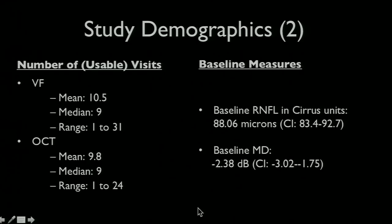There was a mean of 10 usable visual field visits. The median was 9, the mean number of OCT visits was 10, and the baseline RNFL in the Cirrus units was 88, and the baseline mean deviation was minus 2.38.